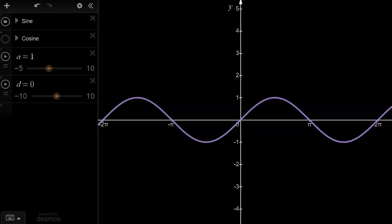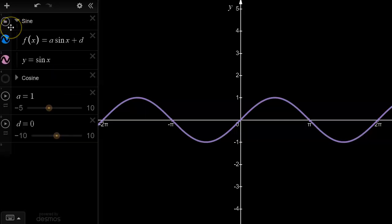Now, I've set up the graphing application to graph y equals a sin x plus d, where to start with a equals 1 and d equals 0. That means that the pink curve is the graph of just simply y equals sin x.